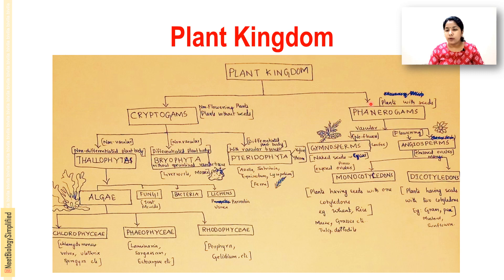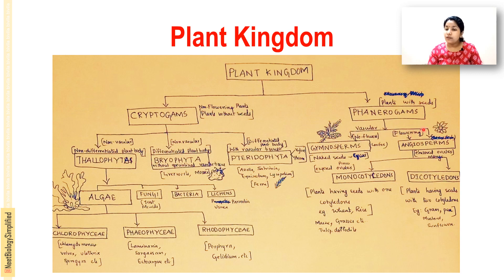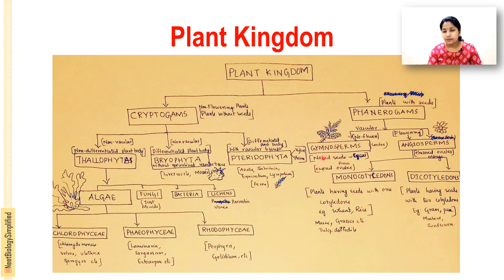Coming under phanerogams — plants with seeds — both gymnosperms and angiosperms have a vascular system. Phanerogams are classified based on flowers and seeds — naked seeds or enclosed seeds. Gymnosperms are non-flowering with naked seeds; examples are conifers like Cycas and Pinus, which have exposed ovules.